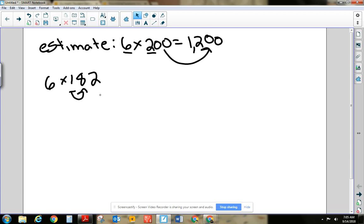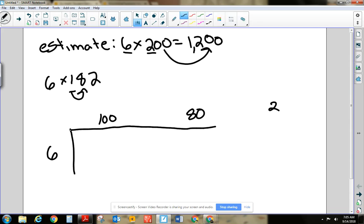All right. So now we're going to set up our problem. So we're going to look at it as 182. We're going to do 6 times, and we're going to make a rectangle, at least the best that we can. All right. And I'll just kind of separate them out.